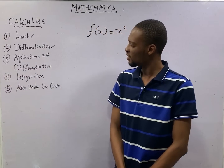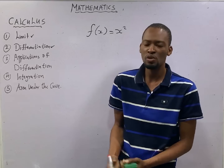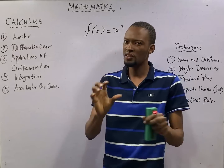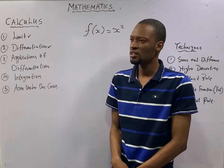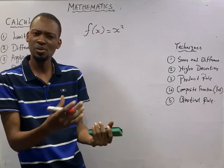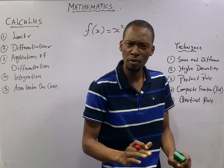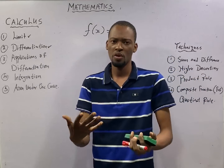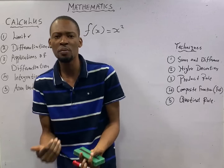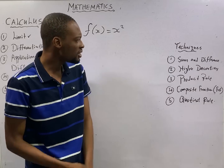The issue with integration is that sometimes when trying to get back what you differentiated, some terms will be lost — you cannot get everything back. There are two methods of differentiation: differentiation from the first principle, also called direct differentiation, and using differentiation techniques. Differentiation from first principle actually shows the ratio of change in quantities.